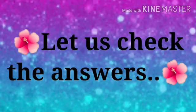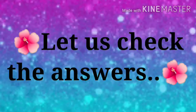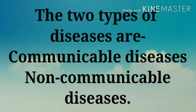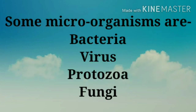Now, it is the time to check the answers to the question asked in module 2. The first answer is the two types of diseases are communicable diseases and non-communicable diseases. The second answer is some microorganisms are bacteria, virus, protozoa and fungi.